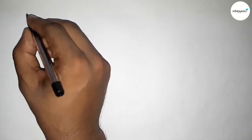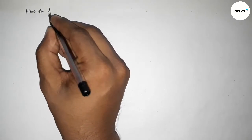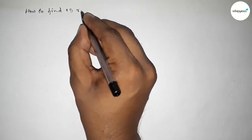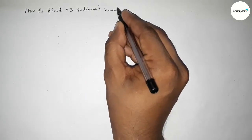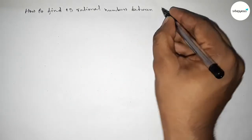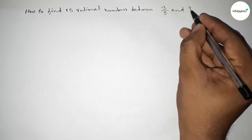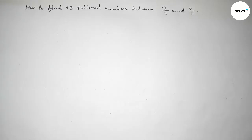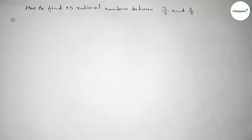Hi everyone, welcome to Size Share Classes. Today in this video we have to find out 15 rational numbers between 3 over 5 and 4 over 5. So let's start the video and solve this problem.